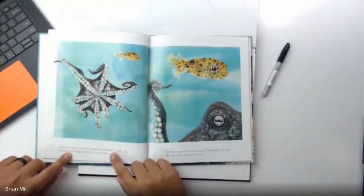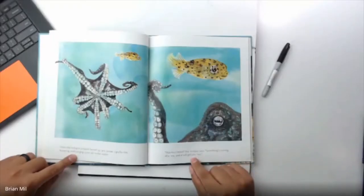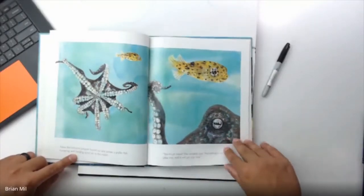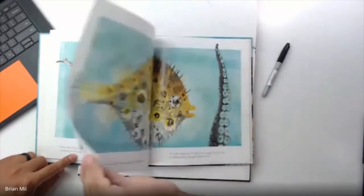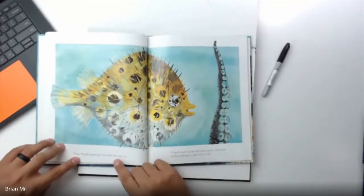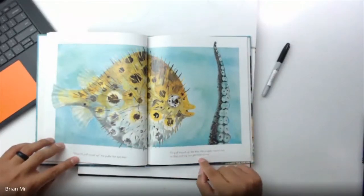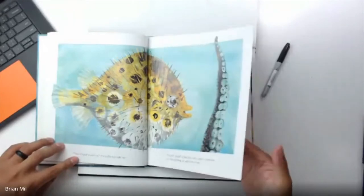Now the octopus propels herself up and passes a pufferfish, hovering with hanging spikes in the corner. You must move, the octopus says, something's coming after me and it will get you too. Then I'll puff myself up, the pufferfish tells her. I'll puff myself up like this into a spiky round ball so that nothing can get a hold of me. That's pretty cool.